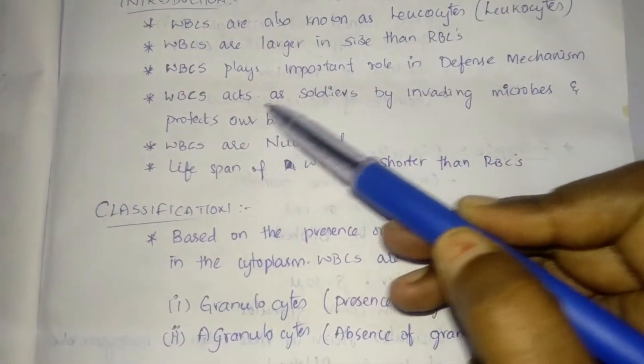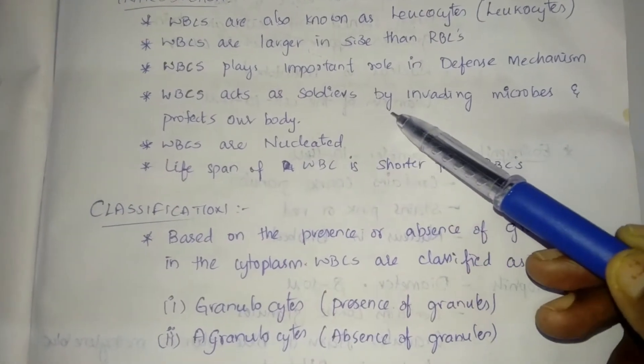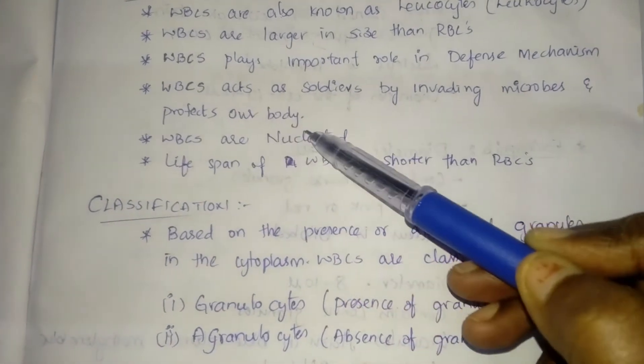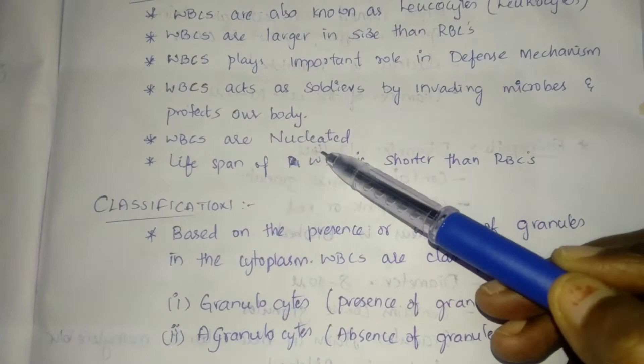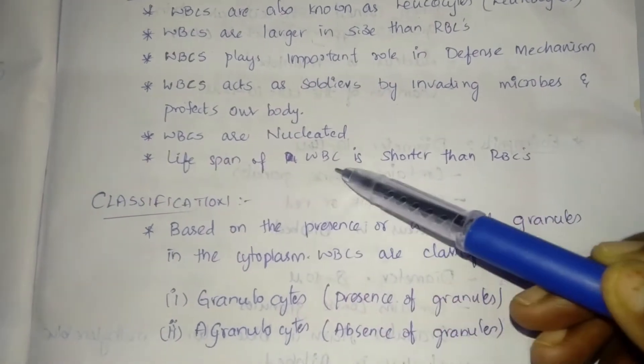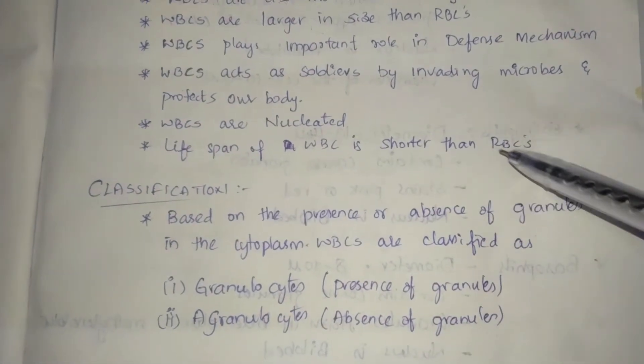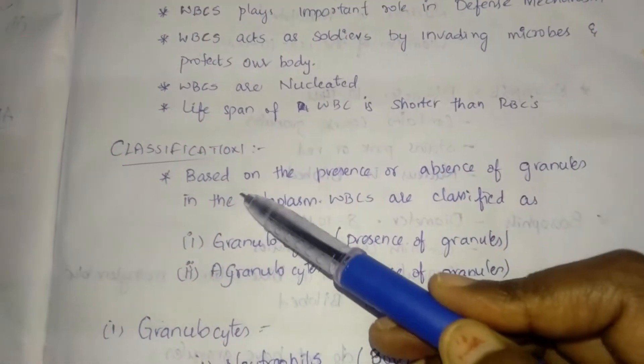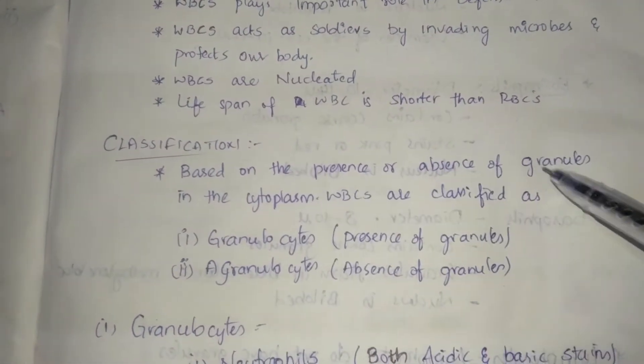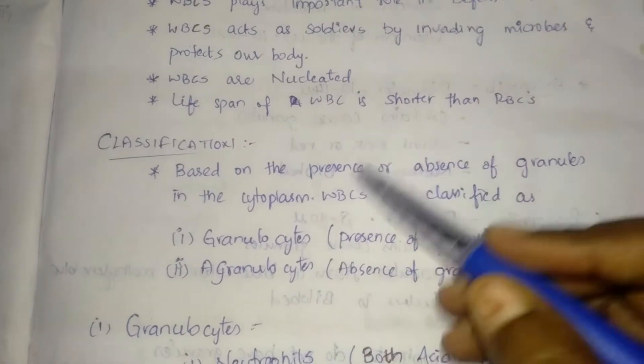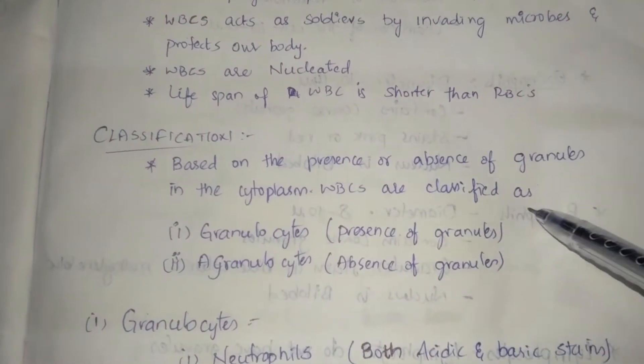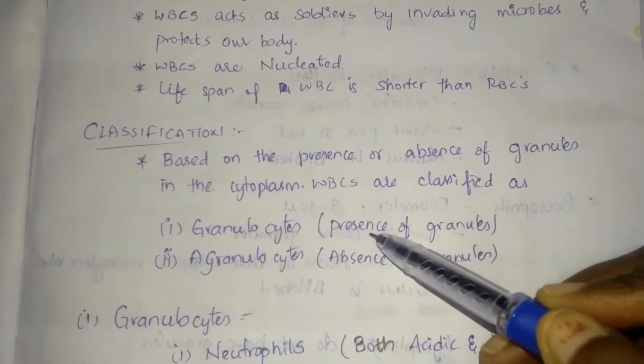WBCs act as soldiers by invading microbes and protect our body. WBCs are nucleated. Lifespan of WBC is shorter than RBC. Classification: based on the presence or absence of granules in the cytoplasm, WBCs are classified as granulocytes, meaning presence of granules, and agranulocytes, meaning absence of granules.